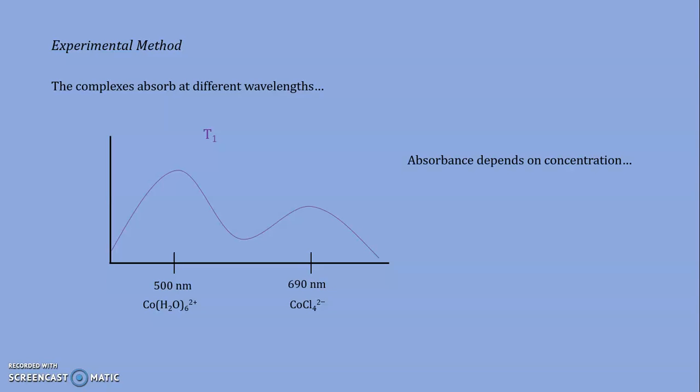These two complexes absorb at different wavelengths, which means if I happen to have both present in the same aqueous solution, I might expect to see an absorption at different wavelengths for each of those two complexes. An absorption at around 500 nanometers for the aqua complex, and absorption at around 690 nanometers for the chloride complex. That absorption will obviously depend on the concentration of those complexes, and we expect those concentrations to change with a change in temperature.